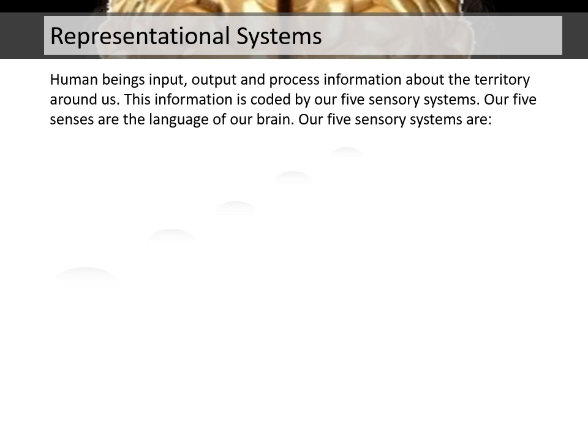Representational Systems. Human beings input, output, and process information about the territory around us. This information is coded by our five sensory systems. Our five senses are the language of our brain.